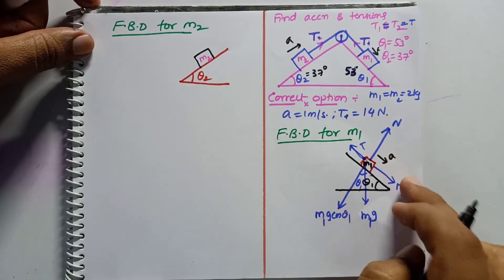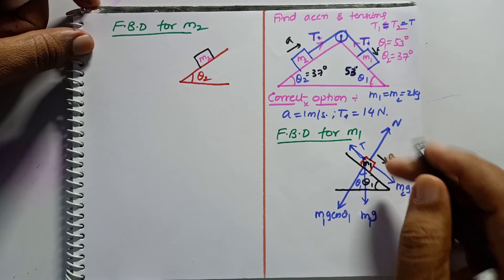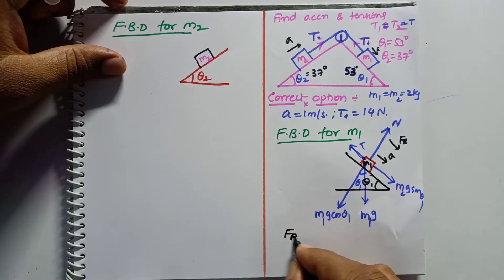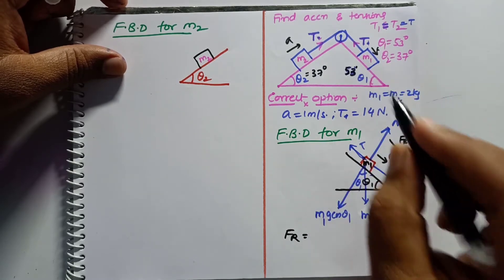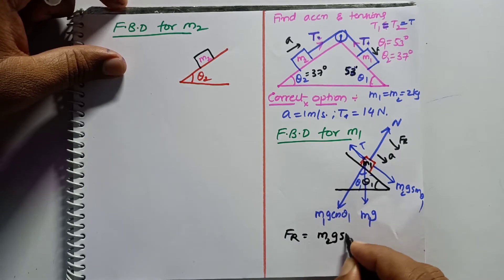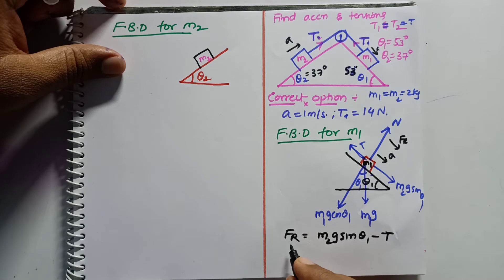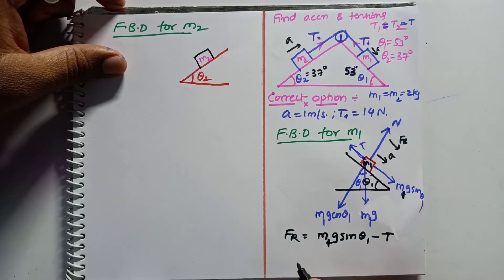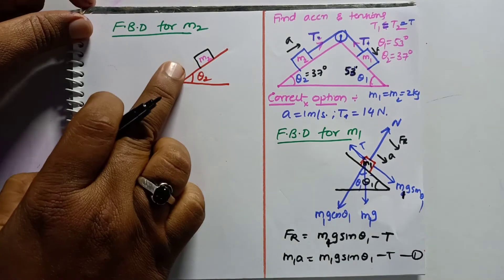Both forces acting on m1 are m1·g·sinθ1 and tension T. As acceleration is in this direction, the resultant force is also in this direction, and the final equation is the difference of the two forces. Since the block moves in this direction due to the larger angle, we write: m1·a = m1·g·sinθ1 − T. This is equation number 1.